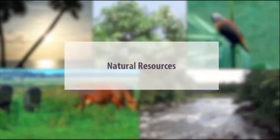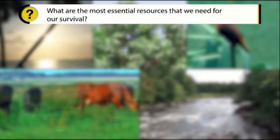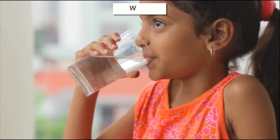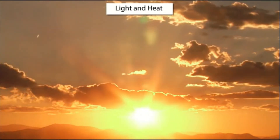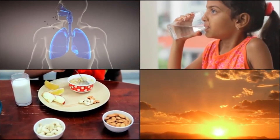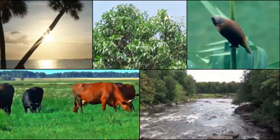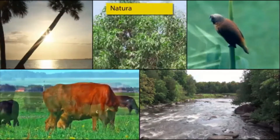You will learn about the different types of natural resources. Let's begin by listing the resources that are most essential for our survival. Air, water, food, light and heat are some of the resources that are most important for the survival of living beings. We draw these resources from the environment and use them directly without much modification. These resources are called natural resources.